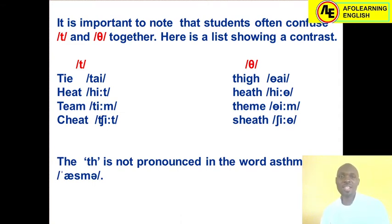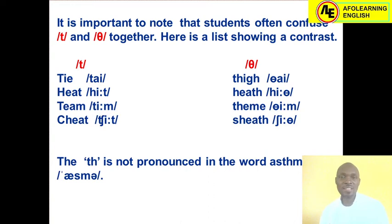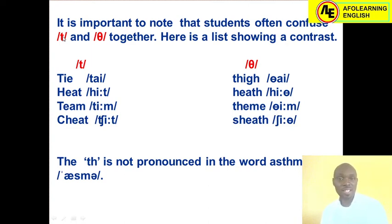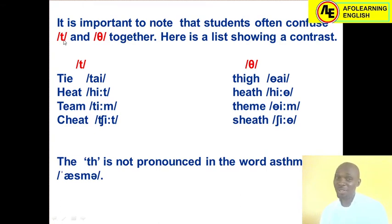For second language speakers — that is, non-native speakers — they often replace the dental fricative /θ/ with the alveolar plosive /t/. The obvious reason is that the dental fricative is a sound that is not found in our indigenous or native languages. So in the attempt to pronounce English words that contain the dental fricative, we replace it with the alveolar plosive. Let's take a look at some examples.